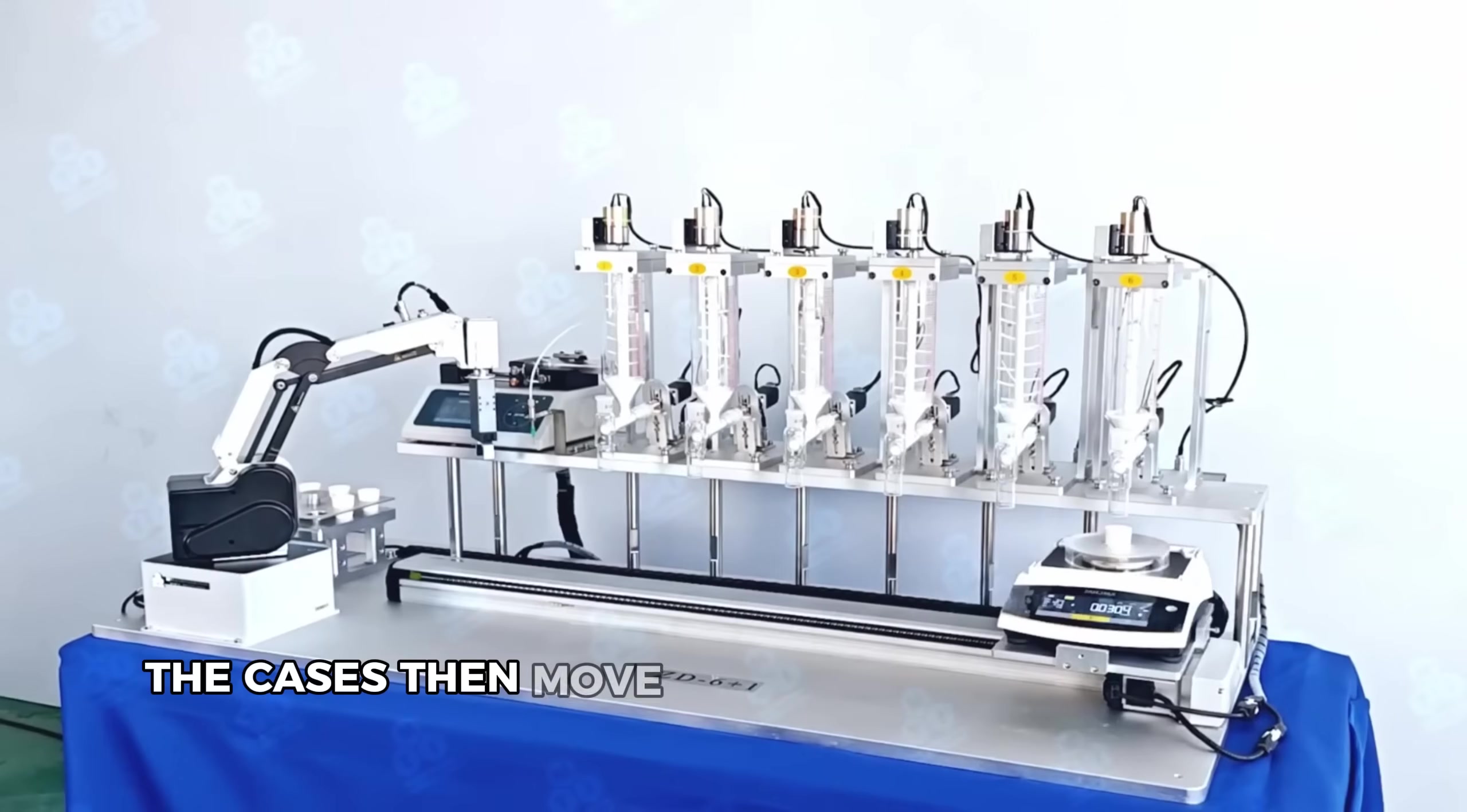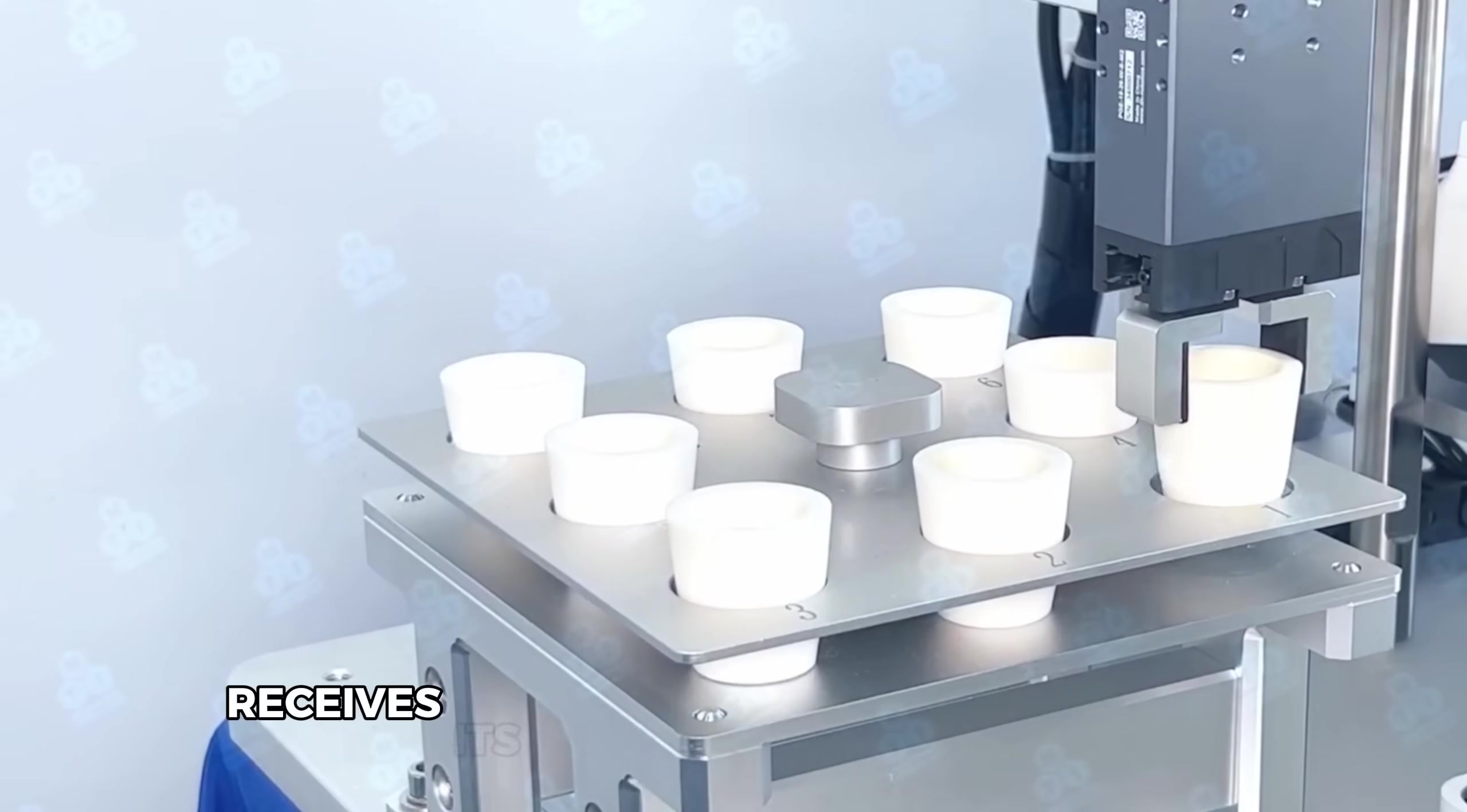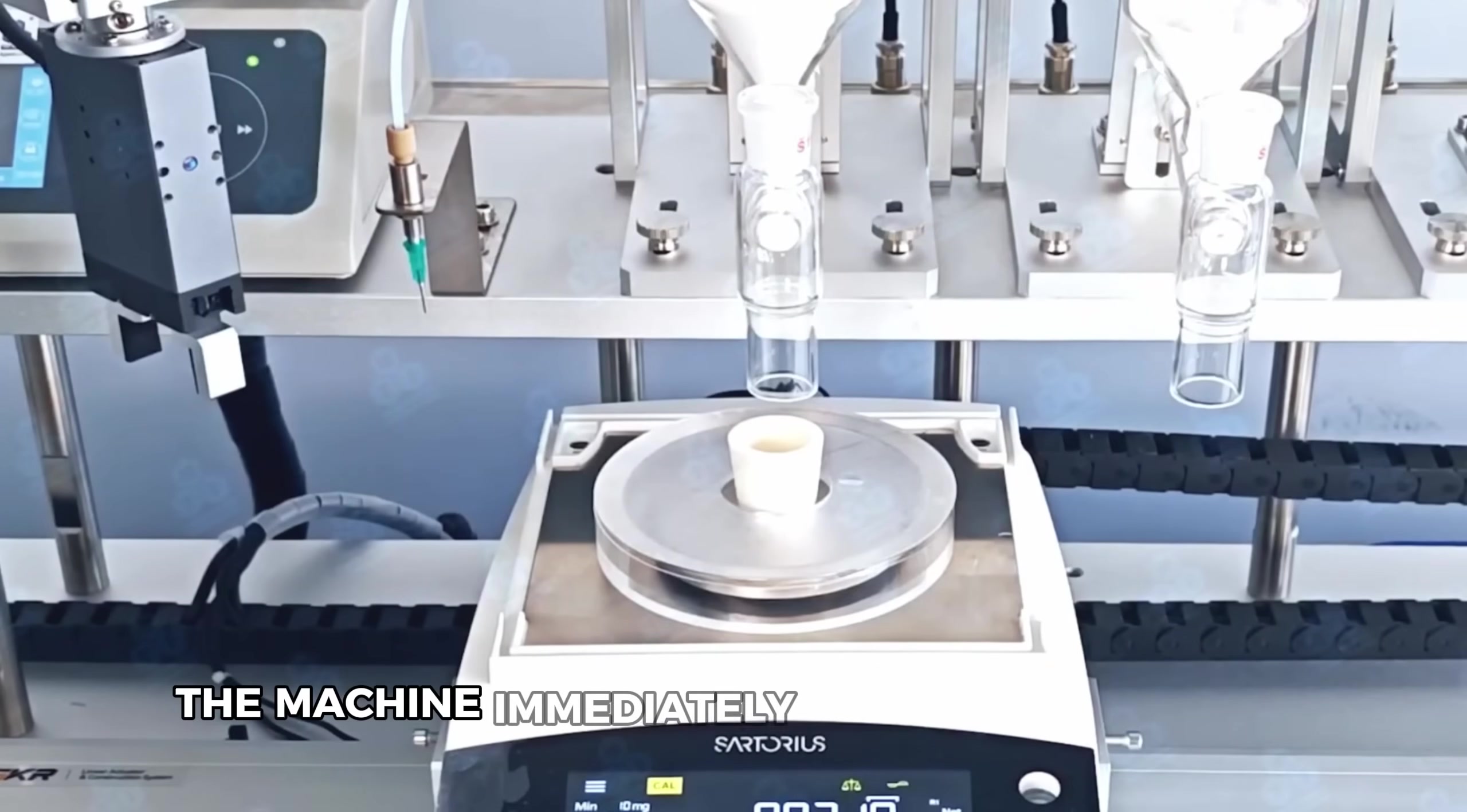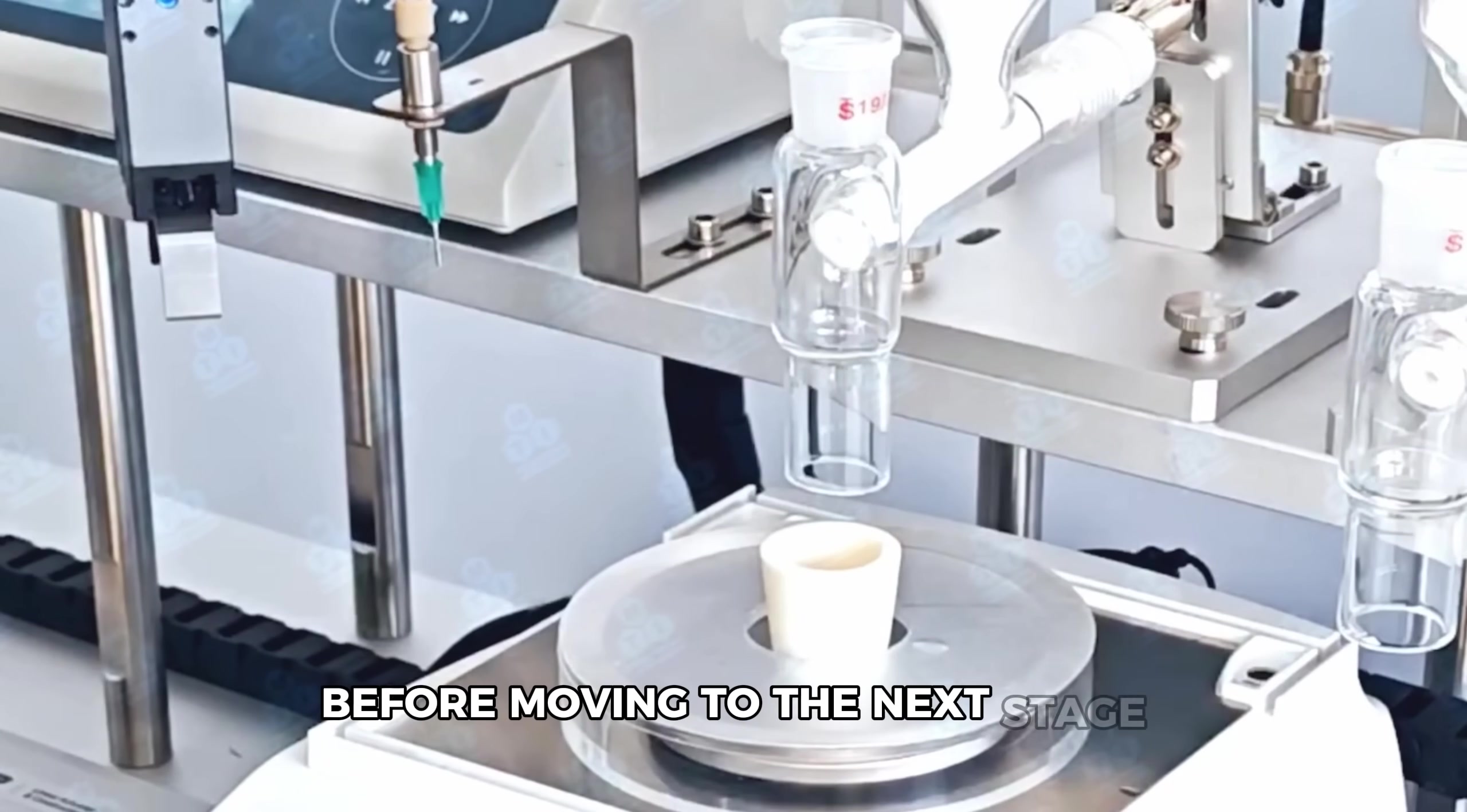The cases then move to the powder dispensing station. These computerized dispensers measure out propellant with astonishing accuracy. See how each case receives its carefully measured charge? Even a variation of just a few granules could create a round that's either underpowered or potentially dangerous. The machine immediately verifies the weight after dispensing, automatically rejecting any charge that's even slightly off-spec before moving to the next stage.